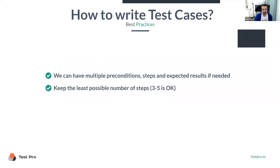Just a couple of best practices before we start actually writing them. We can have multiple precondition steps and expected results if needed. Sometimes test cases can be very tricky and can take quite a while to really get to the state of the application or do the steps. But try to keep the least possible number of steps — three to five is kind of a sweet spot, but shorter is better. It's documentation, so it has to be clearly written but as concise as possible.